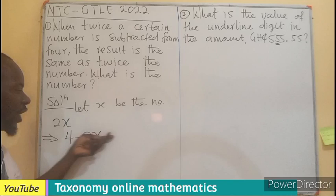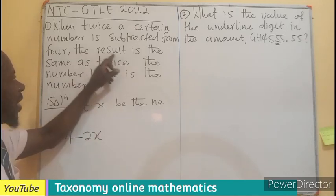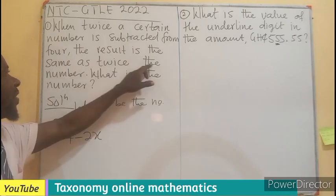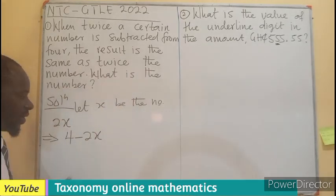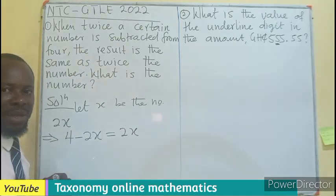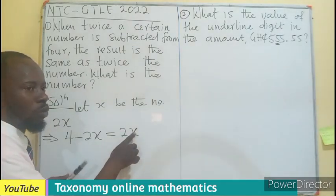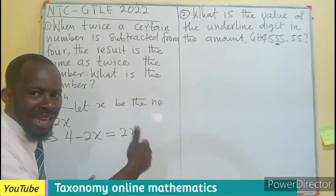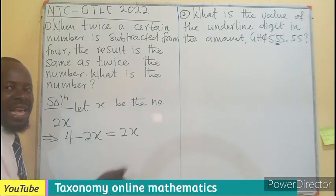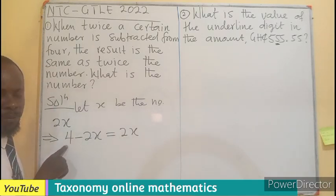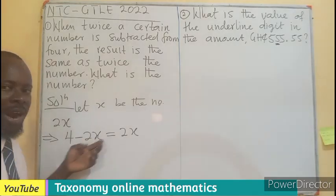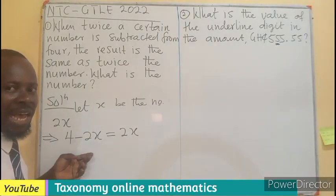The answer is the same as twice the number, meaning if you multiply 2 by the number, the answer you will get is the same as if you multiply 2 by the number and you take it away from 4. This gives us a simple linear equation with the unknown variable at two sides, or both sides of the equal sign.